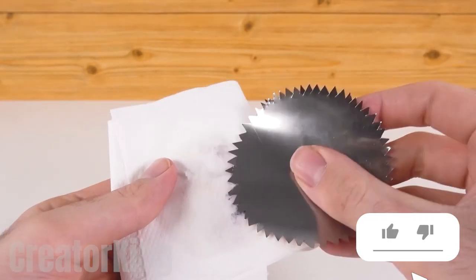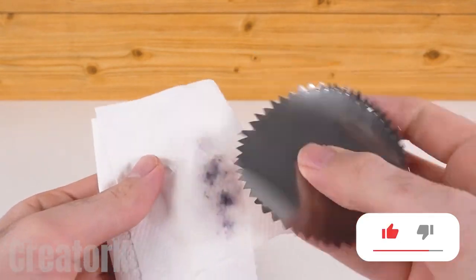Take some paper and pour some solvent to clean the circle, removing all the marks we made before.